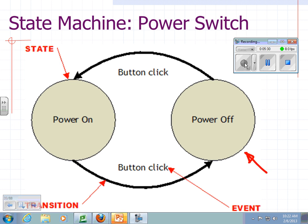Now, here's a classic state machine, the power button. If we start with the power off, and we click the button, it goes to the on state. If we click the button, it goes to the off state, and it goes round and round and round.